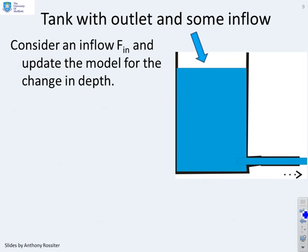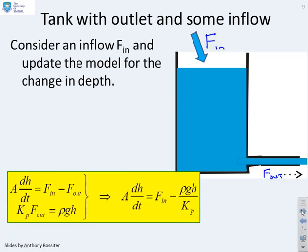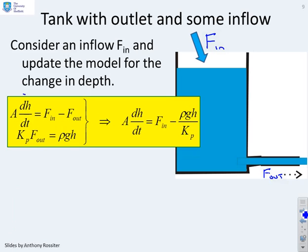Final example then. Let's consider some form of tank. Here you'll see the tank has got an inflow, F in, and an outflow, F out. What we're interested in is how does the depth of the tank depend on the flow in and the flow out. This modelling is moderately straightforward. You'll see the rate of change of volume in the tank, A dH/dt, is given by flow in minus flow out. If we make a simplifying assumption, which is that the flow out has got a linear dependence on the depth, which is true for small changes in depth, then I can come up with a constant K and the equation. F out equals rho G H.